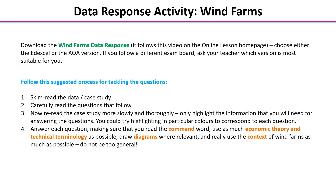First of all, skim read the case study data — just skim it, run your finger down the middle very quickly to get a general gist. Secondly, read the questions very, very carefully. Once you've done that, reread the case study slowly and thoroughly. Now you know what the questions are asking for, you can highlight the bits of information you really need. You could try highlighting in particular colours to correspond with different questions. When you look at each question, make sure you read the command word and use as much economic theory and terminology as possible. And when drawing diagrams, remember they should be ACE diagrams and really use the context of wind farms as much as possible.